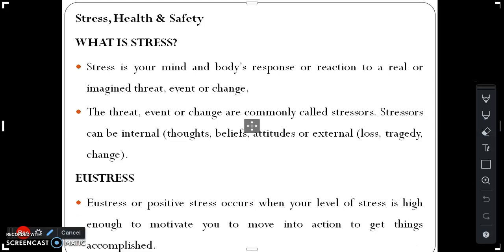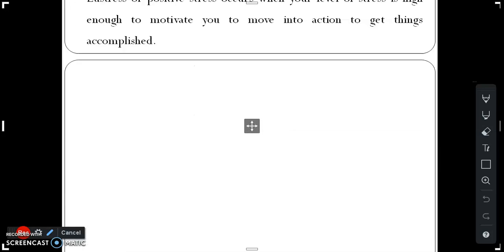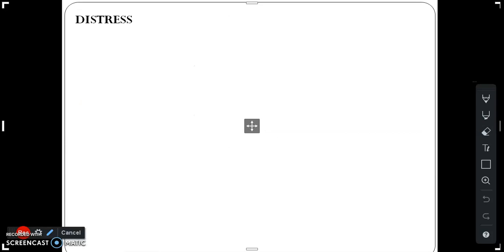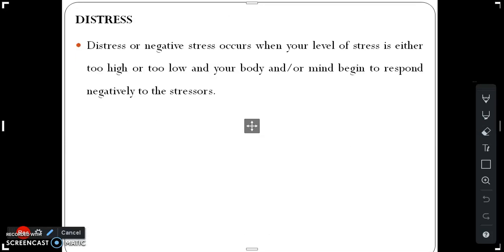Eustress, or positive stress, occurs when your level of stress is high enough to motivate you to move into action to get things accomplished. Distress, or negative stress, occurs when your level of stress is either too high or too low, and your body and/or mind begin to respond negatively to the stressors.